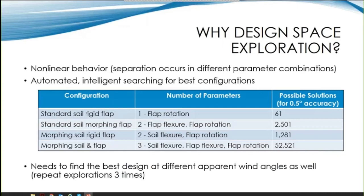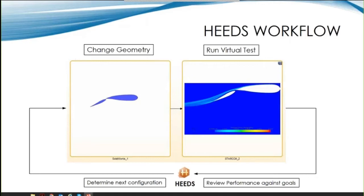The design exploration workflow consisted of making changes to the sail geometry in SOLIDWORKS, passing the updated geometry to STAR-CCM CFD, remeshing and solving the flow model, and then having HEEDS review the results to determine the next design configuration to try.